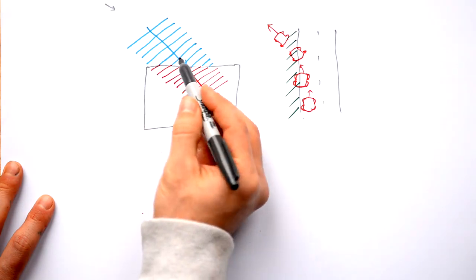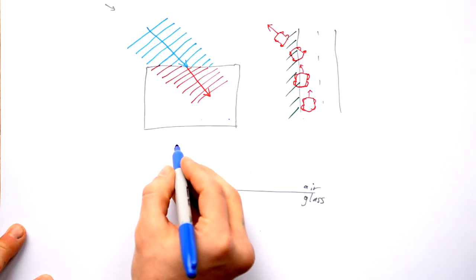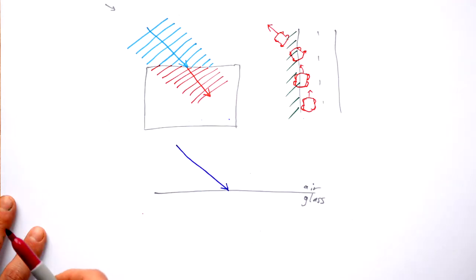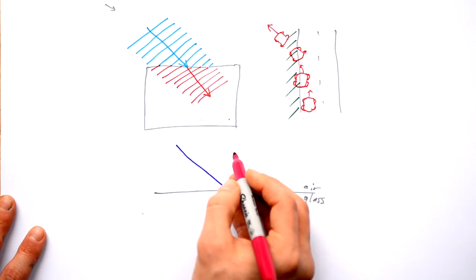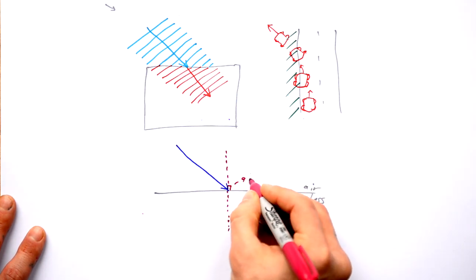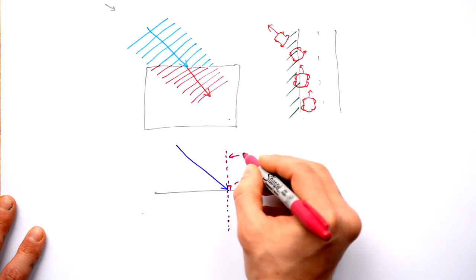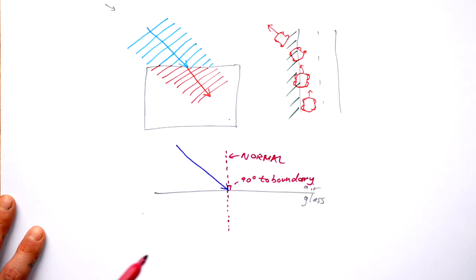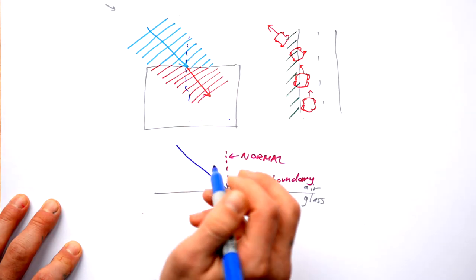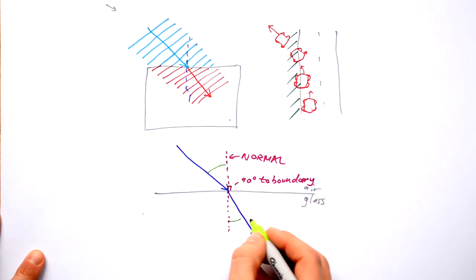Luckily, we don't have to draw wave fronts or cars every time we talk about refraction. Here's my air-glass boundary, and here is my ray of light coming in. We don't have to draw the wave fronts because this is just a very narrow ray of light. What angle is this ray hitting the glass at? We draw a line that is 90 degrees to the boundary — that's what we call the normal. Anything described as 'normal' is 90 degrees to something.